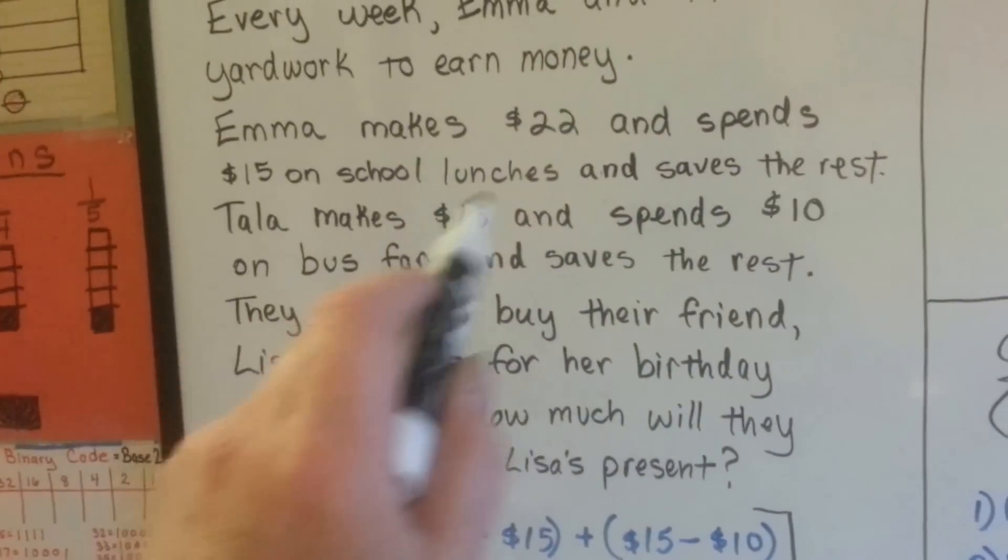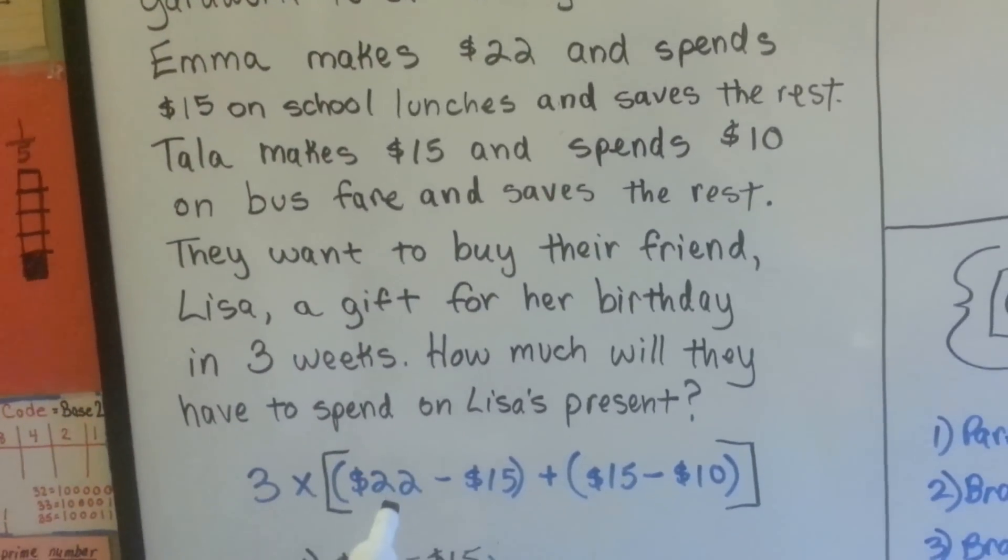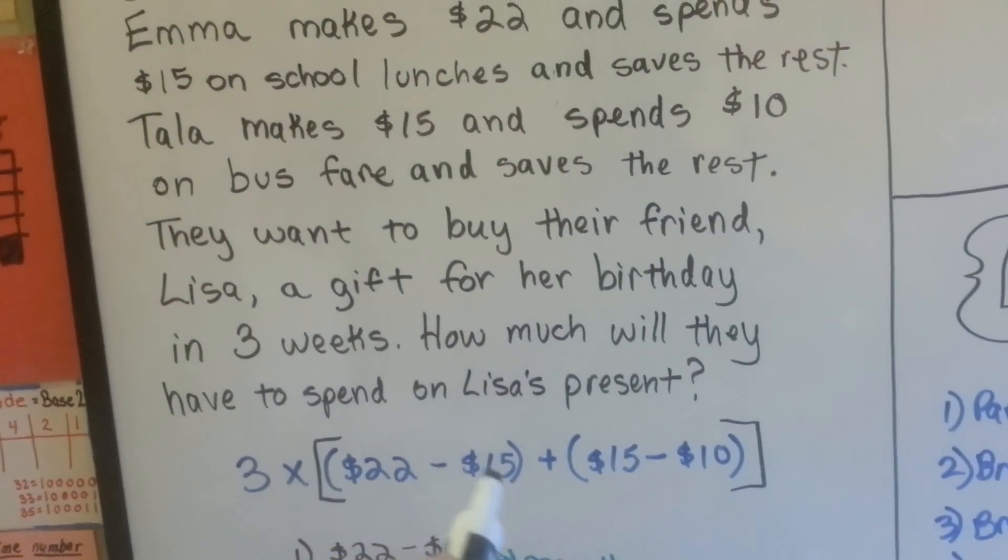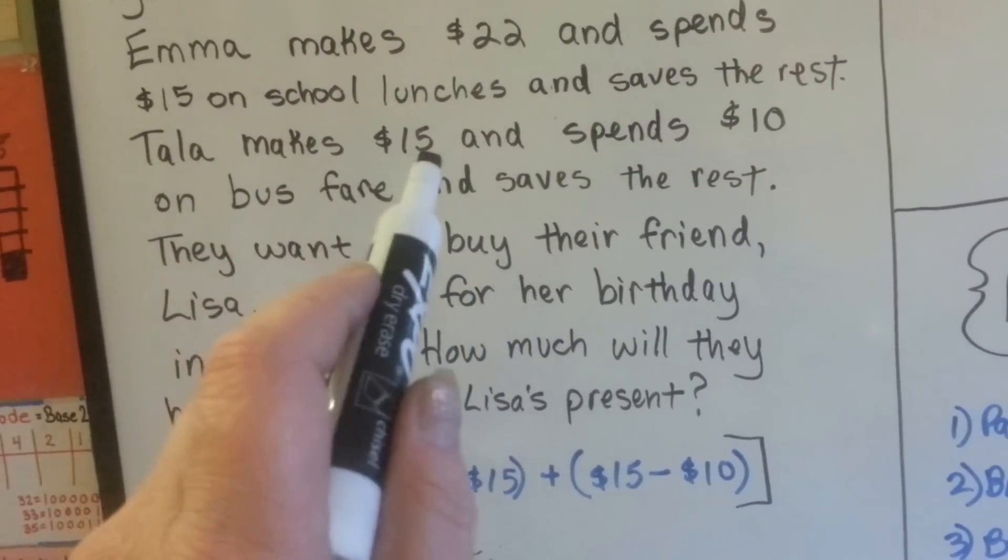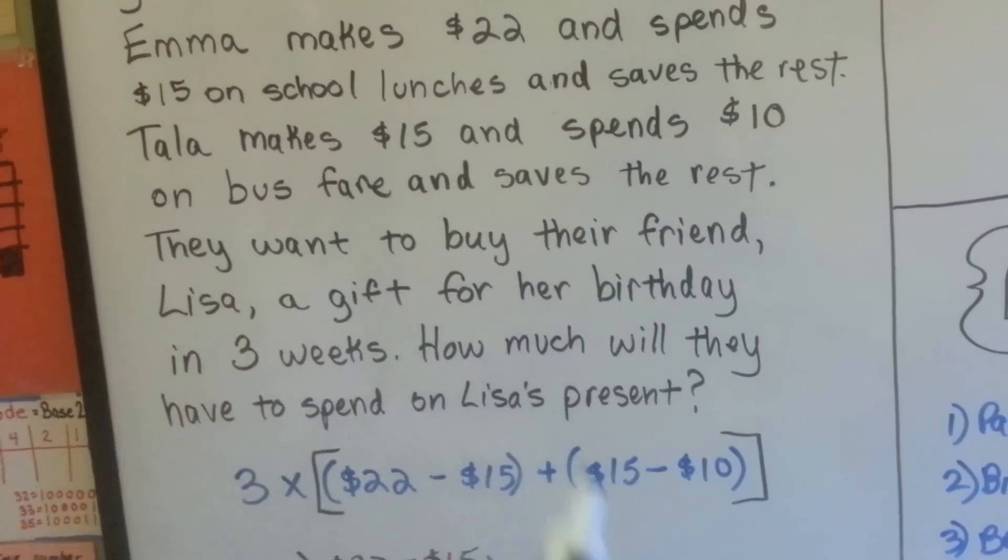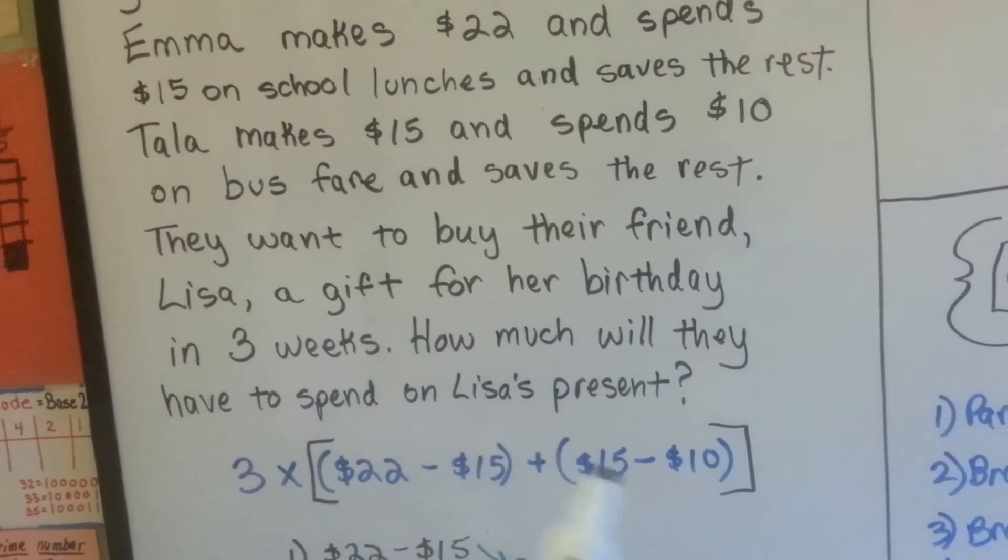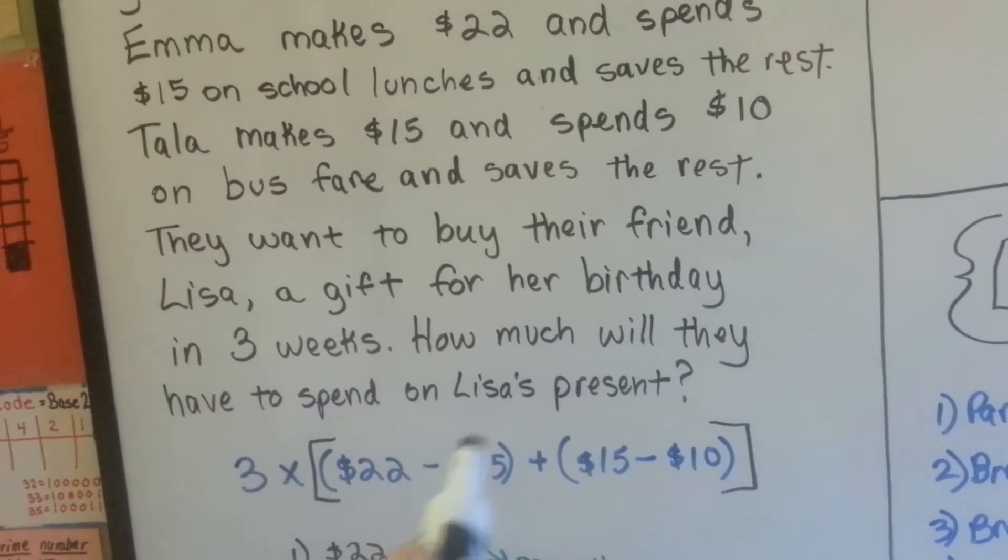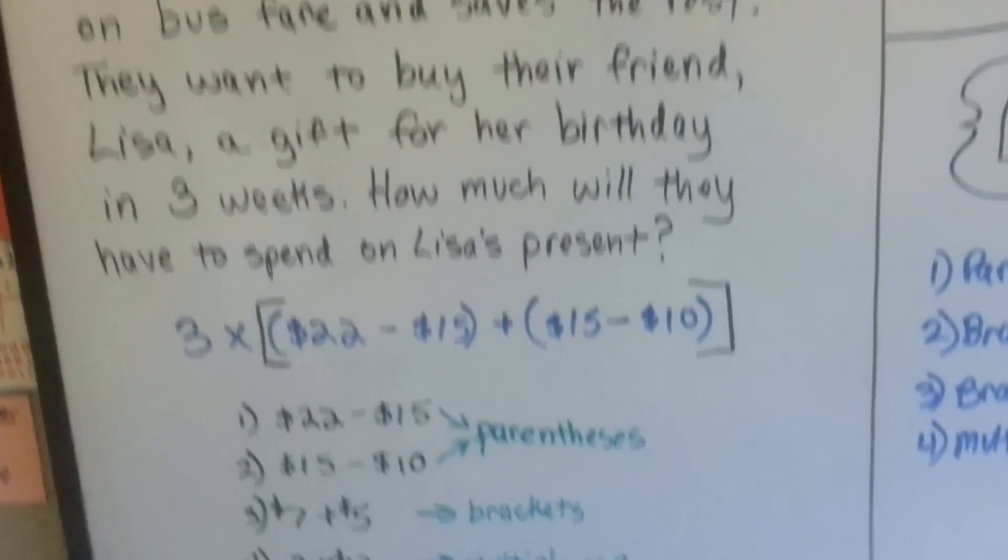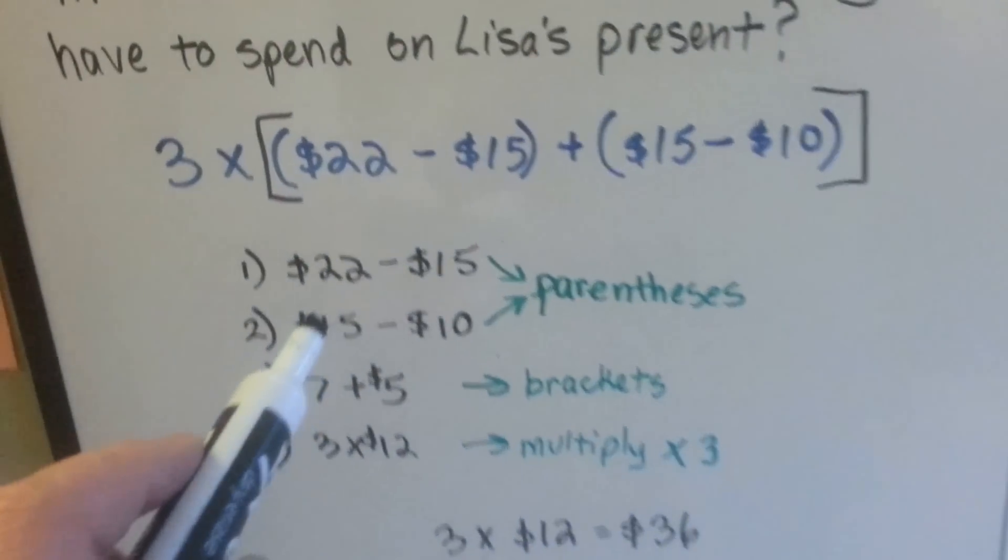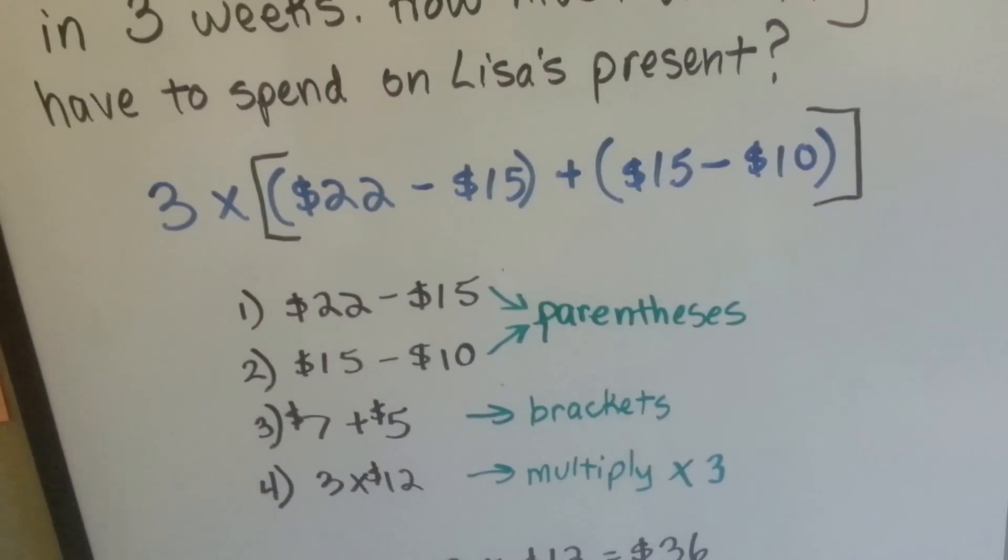We know how much they make. We have to figure out how much they make compared to what they save and spend and then figure out what they have left over for three weeks. So Emma makes $22 and you have to take away the $15 that she spends on school lunches. And then Tala makes $15 and spends $10 on bus fare. Then we need to figure out what that is together and then multiply it by the three. So the first thing we're going to do is the parentheses.